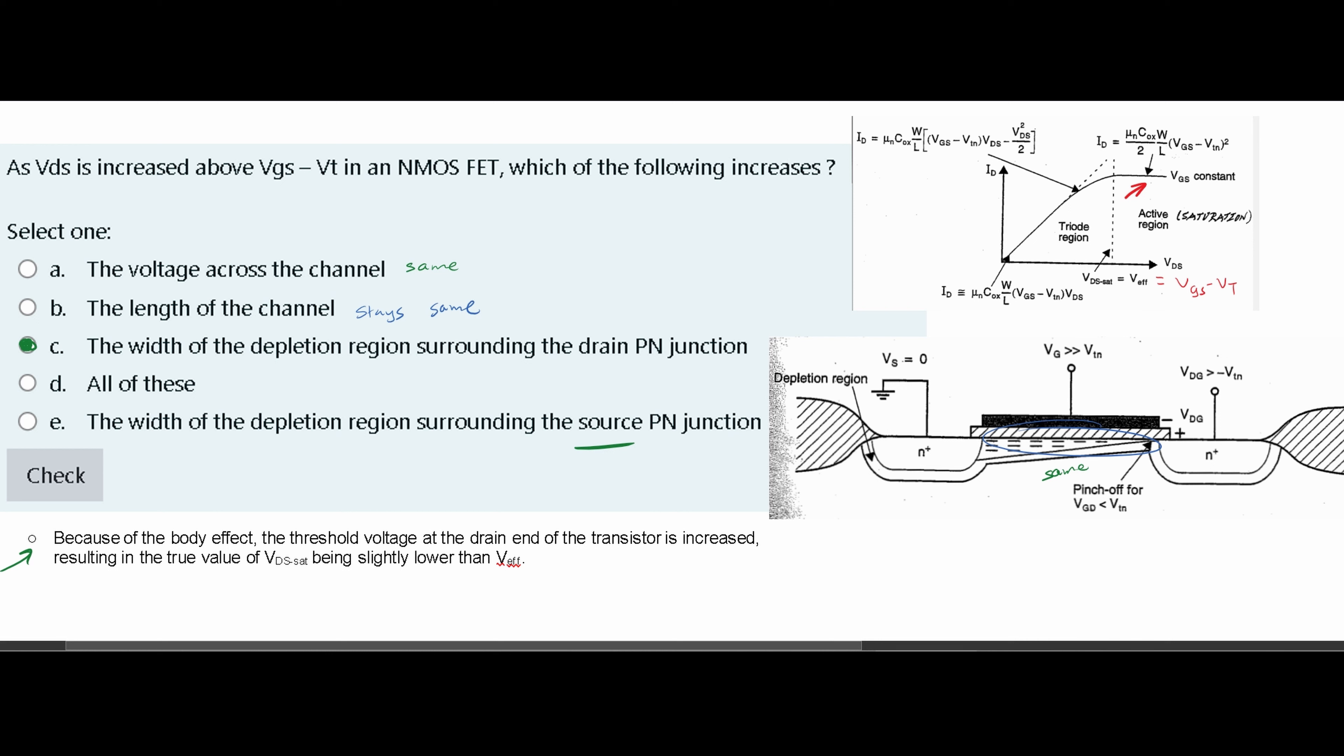So the question is asking us as VDS is increased above VGS minus VT, which would be this part right here, so our VEFF.